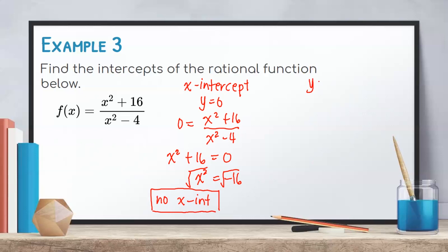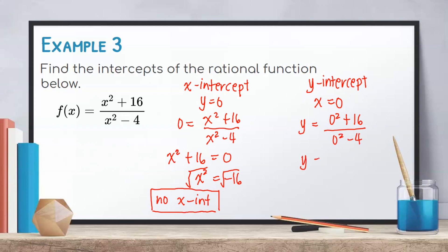For the y-intercept, set x = 0. So y = (0² + 16) / (0² - 4) = 16 / -4 = -4. Therefore, the y-intercept is -4.